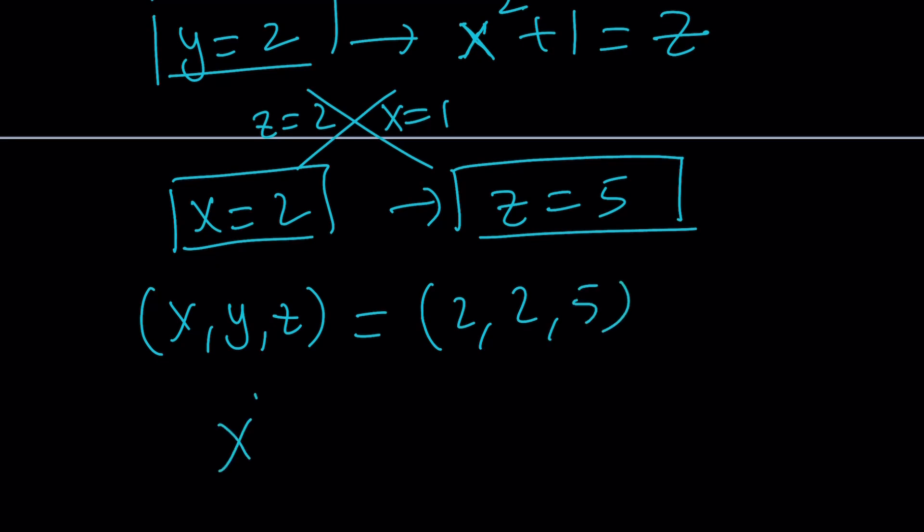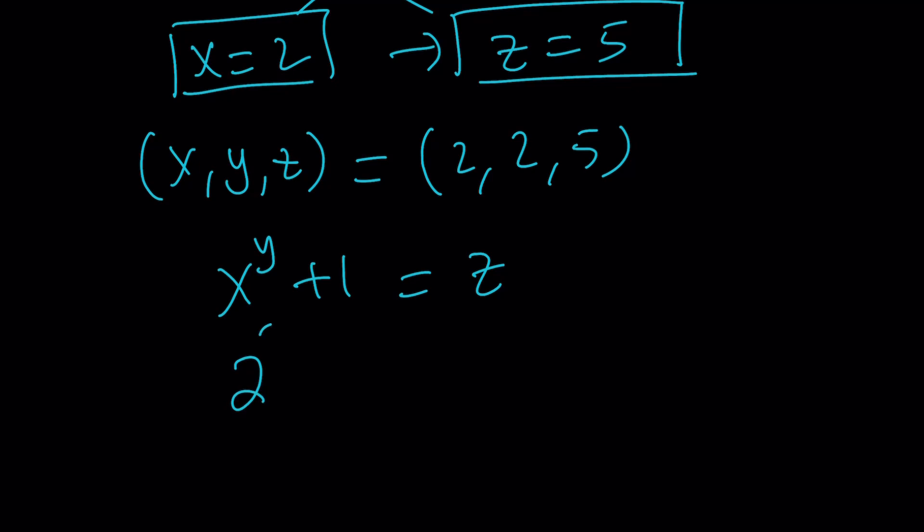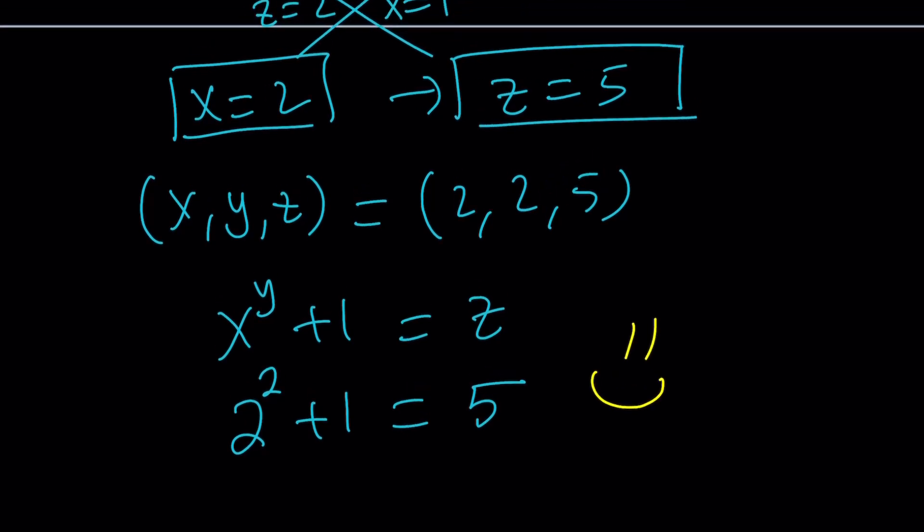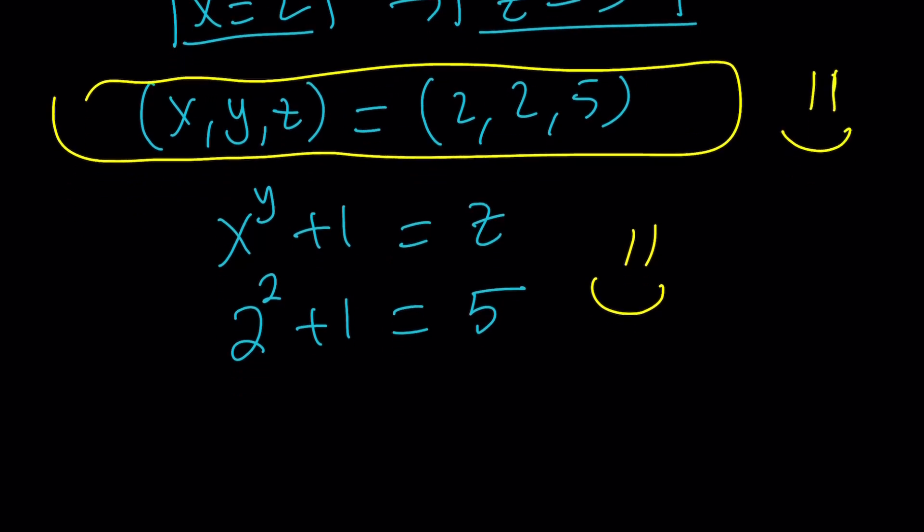In other words, X to the Y plus 1 equals Z can only be maintained with 2 to the 2 plus 1 equals 5. And this brings us to the end of this video. Thank you for watching. I hope you enjoyed it. Please let me know. Don't forget to comment, like, and subscribe. I'll see you next time with another video. Until then, be safe, take care, and bye-bye.